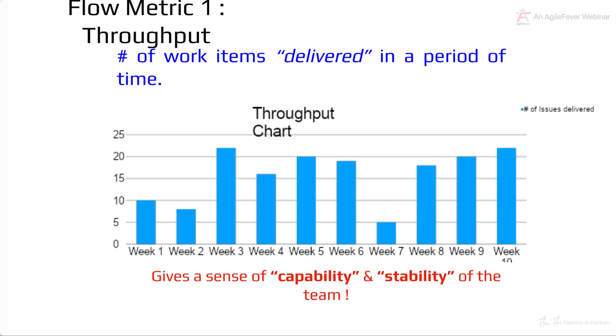What's throughput? Throughput is nothing but number of work items delivered. When you say delivered, different people have different definitions of delivered. Here, I mean completed. It has gone into production or it has reached the customer. So, number of work items delivered in a period of time. And how have we captured it here? Basically, we are capturing it as number of issues delivered, number of tickets delivered.